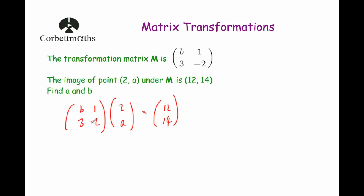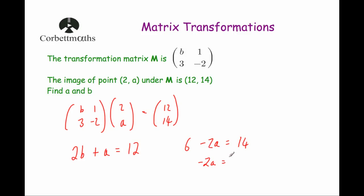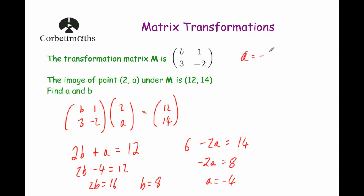We have two equations. The right-hand one has just a's, so solving that first: 6 minus 2a equals 14. Taking away 6 from both sides: minus 2a equals 8. Dividing by minus 2: a equals minus 4. Now substituting into the left equation: 2b plus (minus 4) equals 12. Adding 4 to both sides: 2b equals 16. Dividing by 2: b equals 8. So a equals minus 4 and b equals 8.